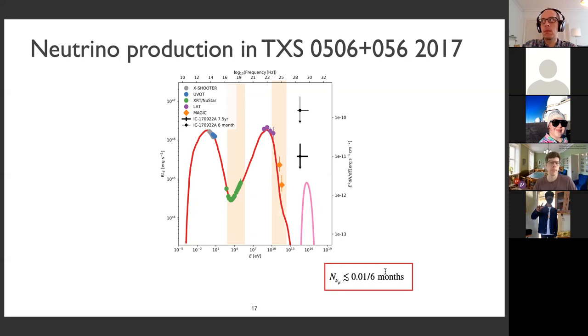It's not possible that all blazers have these kinds of parameters; otherwise we would be observing much more neutrino emission than we actually do. So maybe we can conclude that this is a special source, or that there is no good physical model for the association.